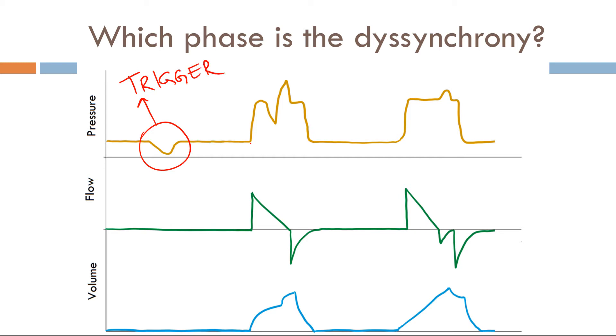Now moving along here, this breath is being triggered and the trigger variable is time because there's no negative deflection. So trigger is not an issue, but once it's triggered, the issue arises right here during the target phase. Therefore, this is a target dyssynchrony.